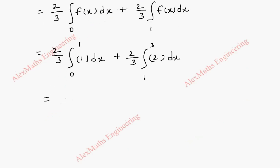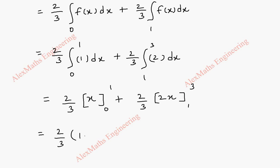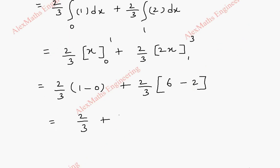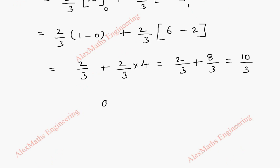Coming to integration: 2/3 · [x] from 0 to 1, plus 2/3 · [2x] from 1 to 3. Using the upper limit we get 1 minus lower limit 0. Similarly, using the upper limit: 2×3 = 6, minus lower limit gives 2. So this becomes 2/3 × 1 plus 2/3 × 4, which is 2/3 plus 8/3 = 10/3. So we got the value of a0, which is 10/3.